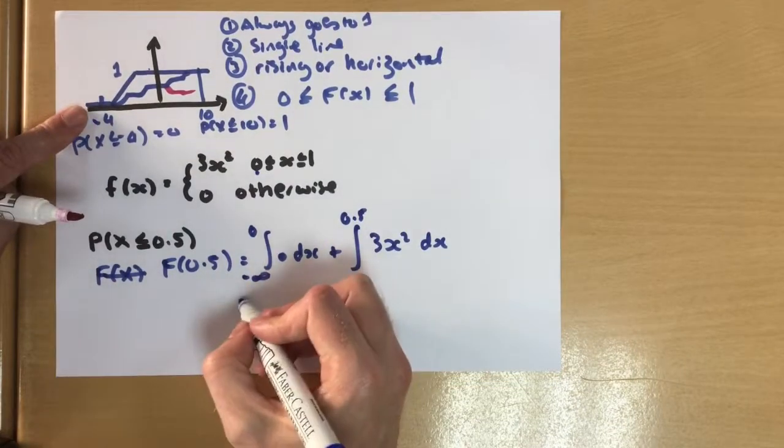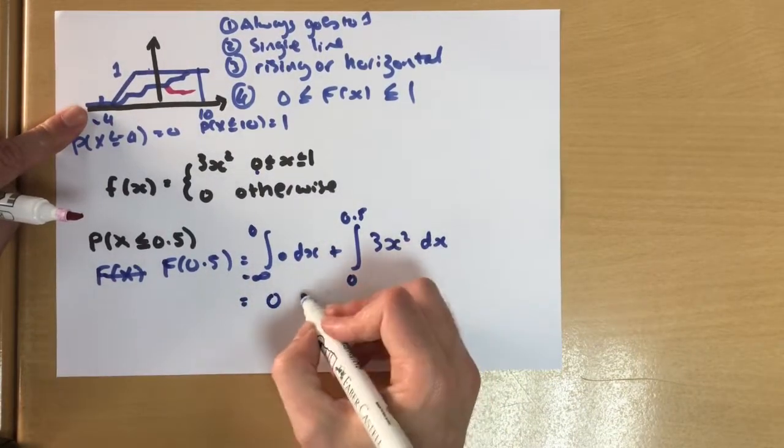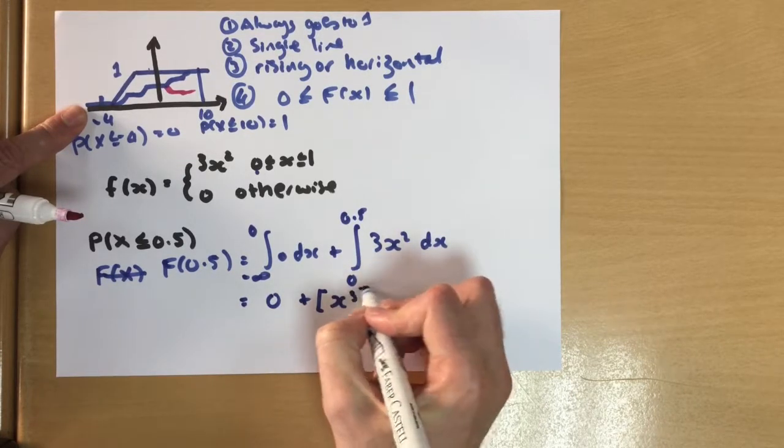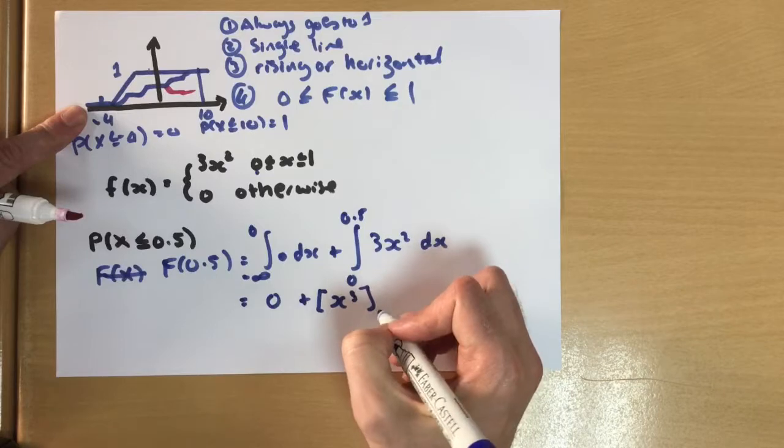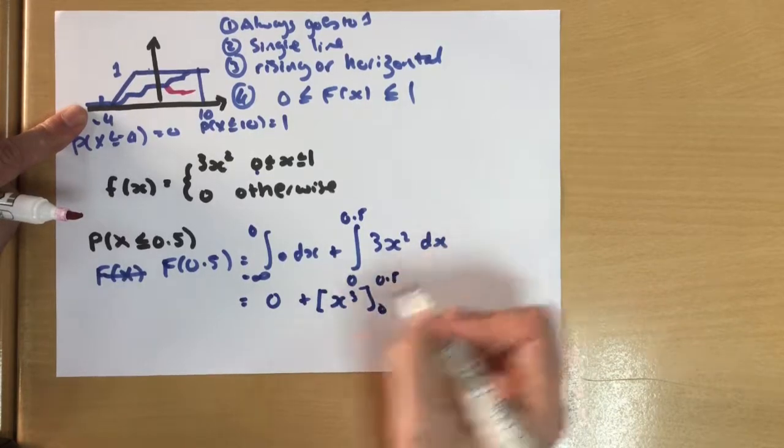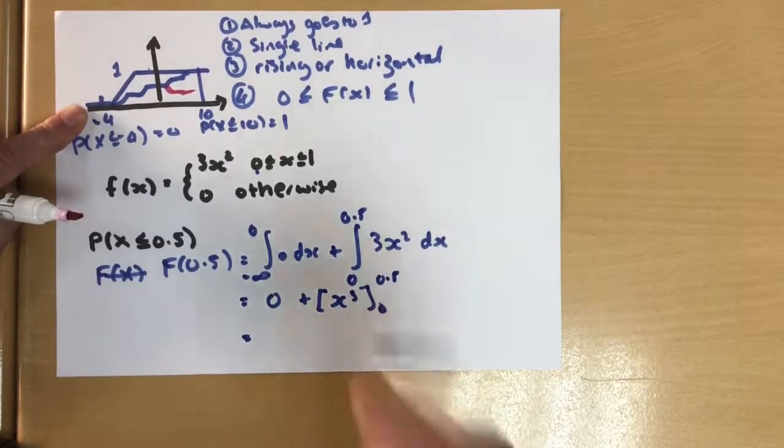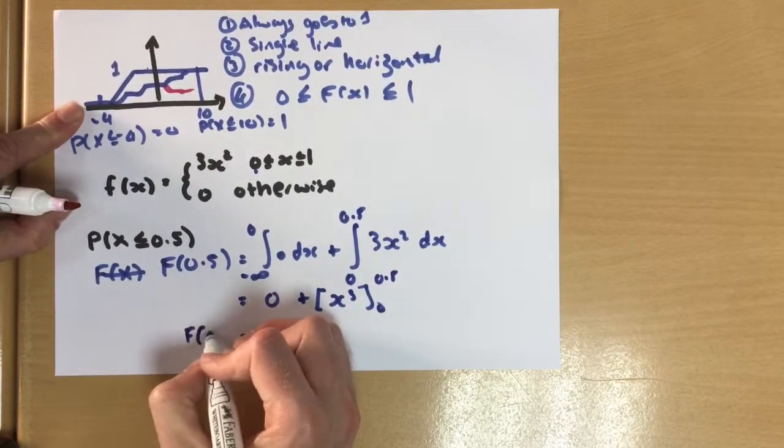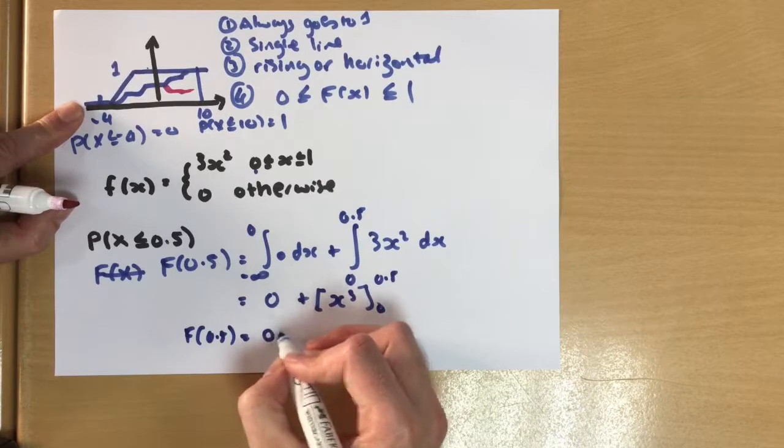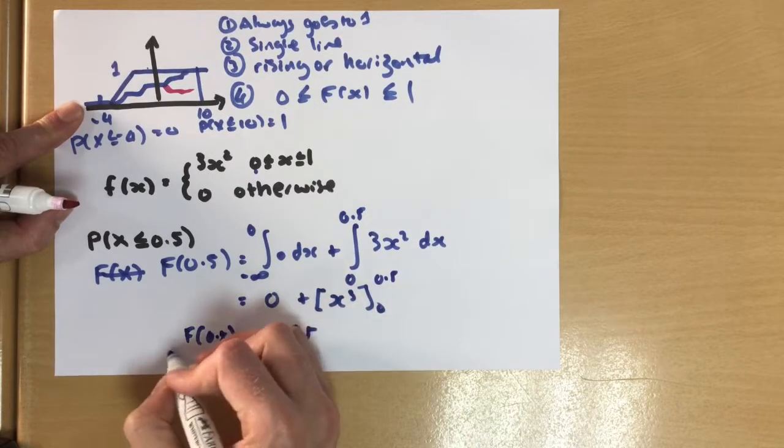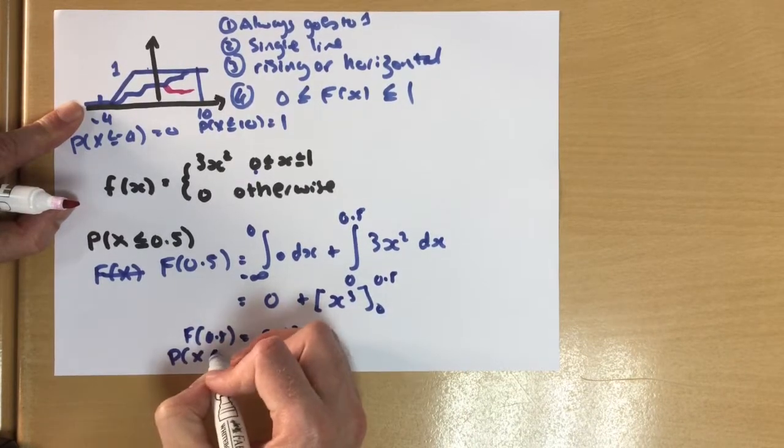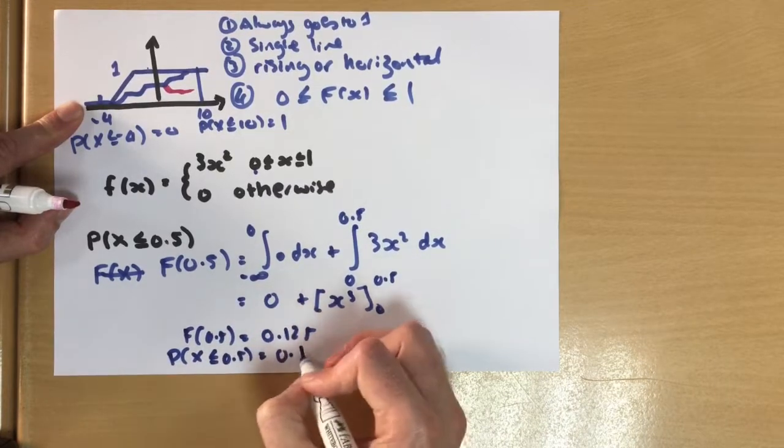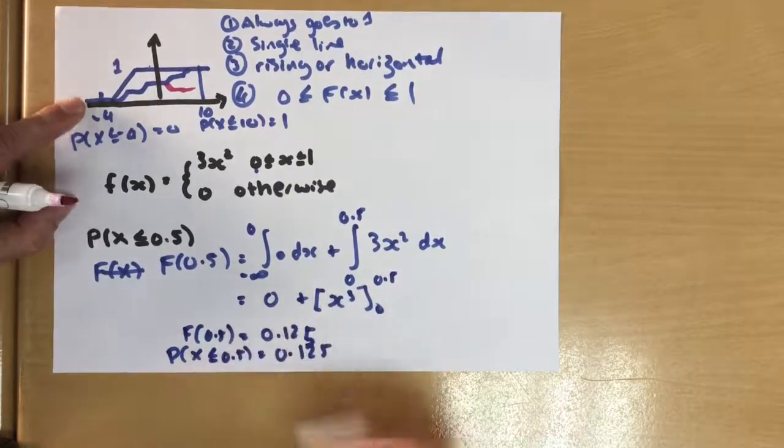And if we integrate that, you'll get absolutely nothing, plus x cubed, and we're going between zero and 0.5. And if you work all that out, you'll find that your cumulative function up to 0.5 is 0.125. Or the probability of x is less than or equal to 0.5 is also 0.125, because it means the same thing.